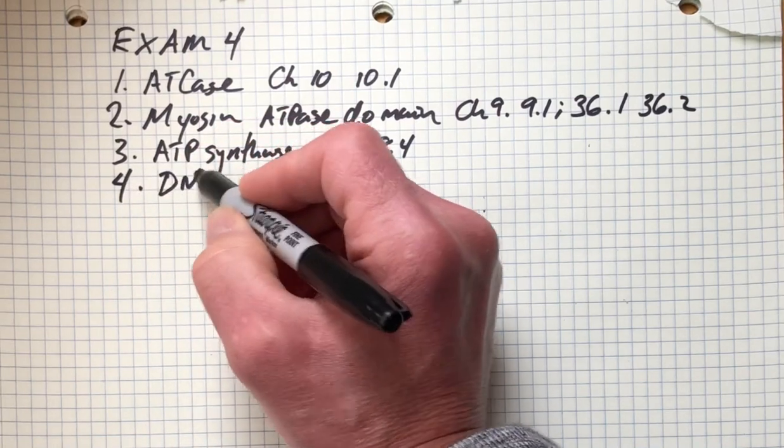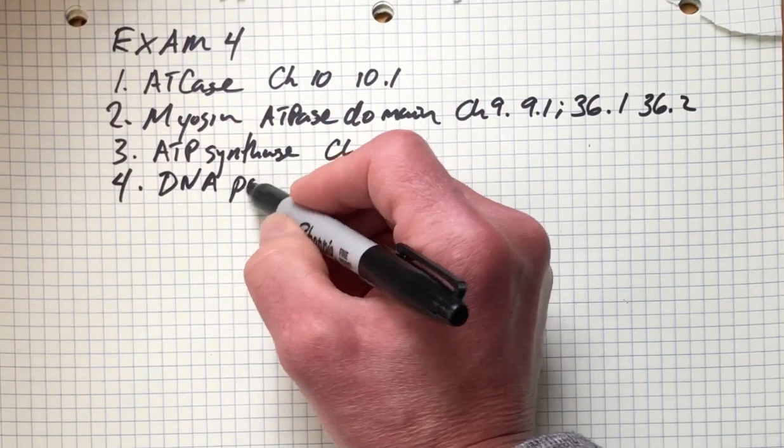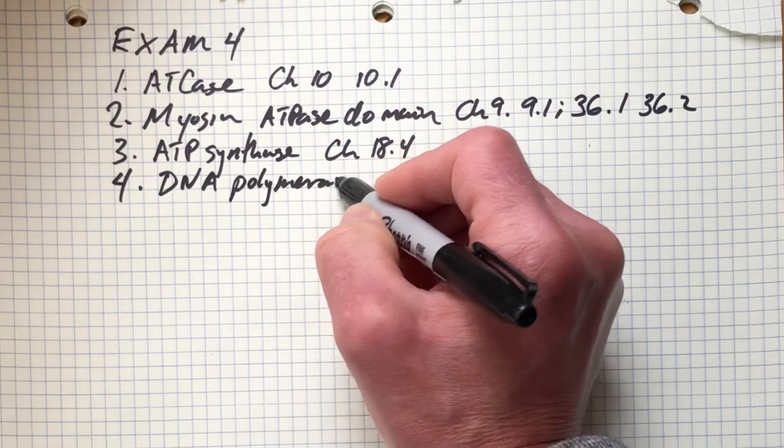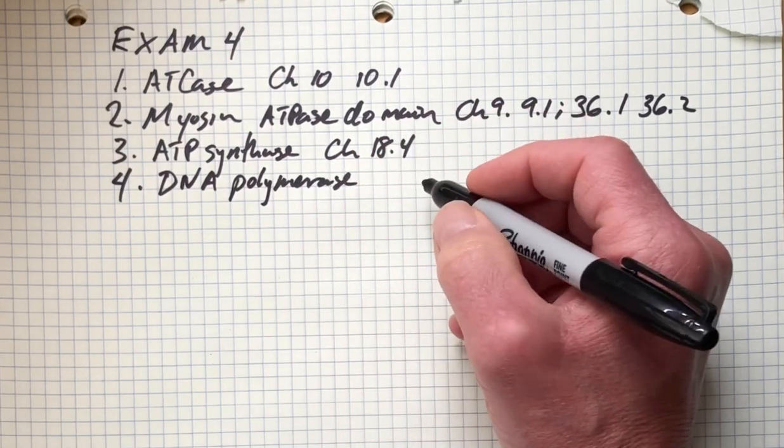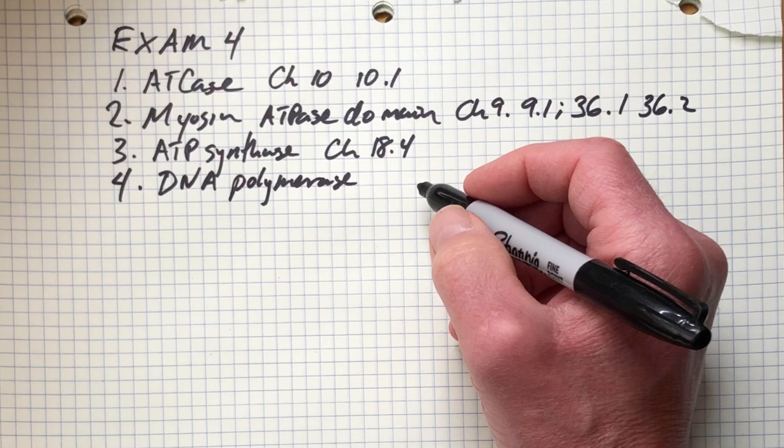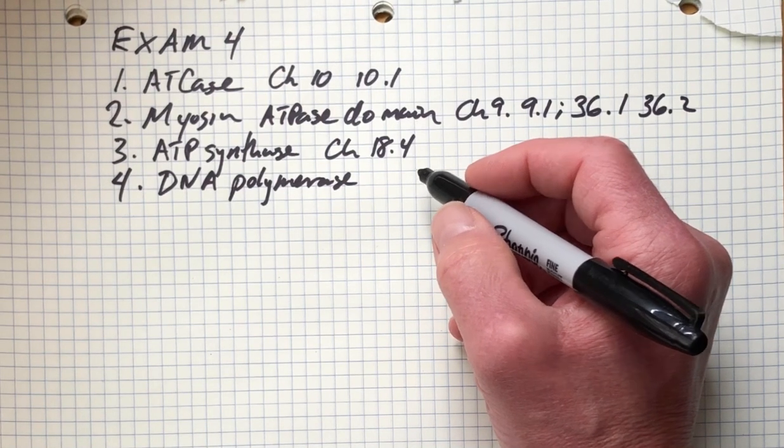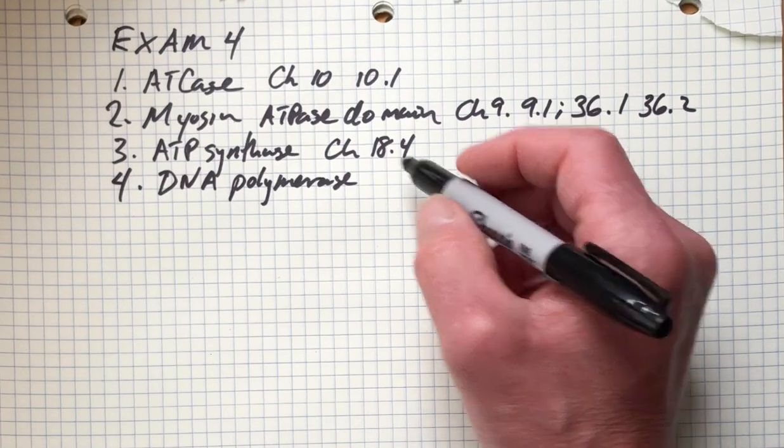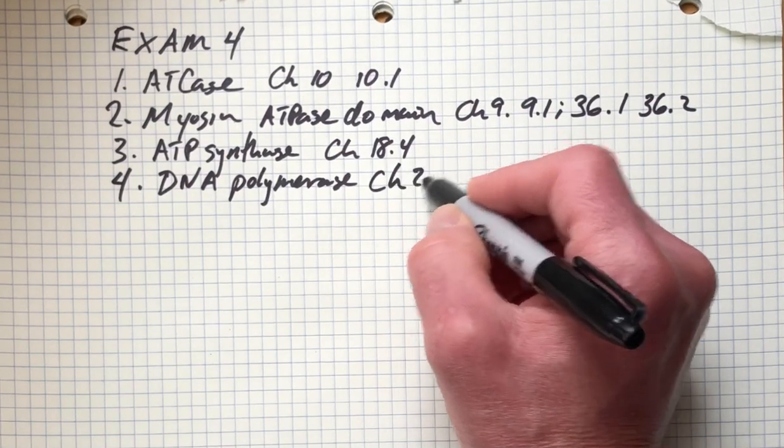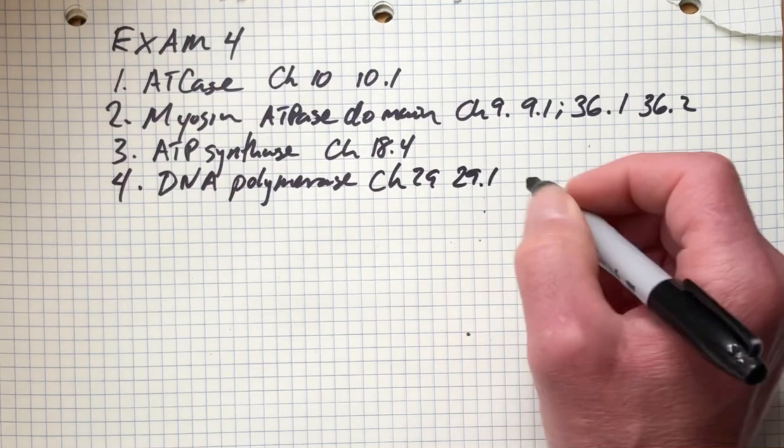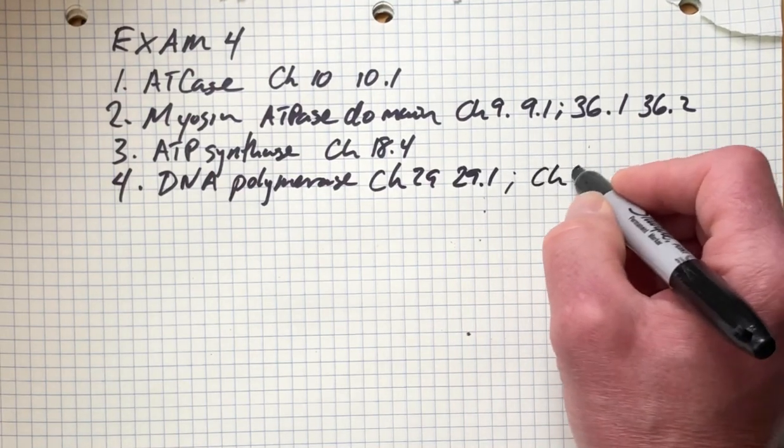Next, we'll move on and talk about DNA polymerase. Examining the nucleotidyl transfer reaction is very important for understanding how genetic information is transmitted with such high accuracy. This is covered in chapter 29, 29.1, and also in chapter 4.4.